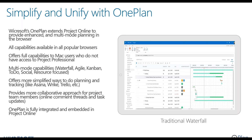OnePlan offers multi-mode capabilities — you can plan waterfall projects, agile projects, Kanban, lower-level to-dos, more social approaches to project management, and resource-focused planning all within OnePlan. It offers more simplified ways to do planning and tracking, like popular entry-level tools such as Asana, Wrike, or Trello, allowing you to dial back and simplify for projects where that's appropriate. It also provides a more collaborative approach for project team members with online comment threads and task updates that can be requested on-demand via email without having to go into the tool itself. The capabilities are fully integrated and embedded in Project Online.